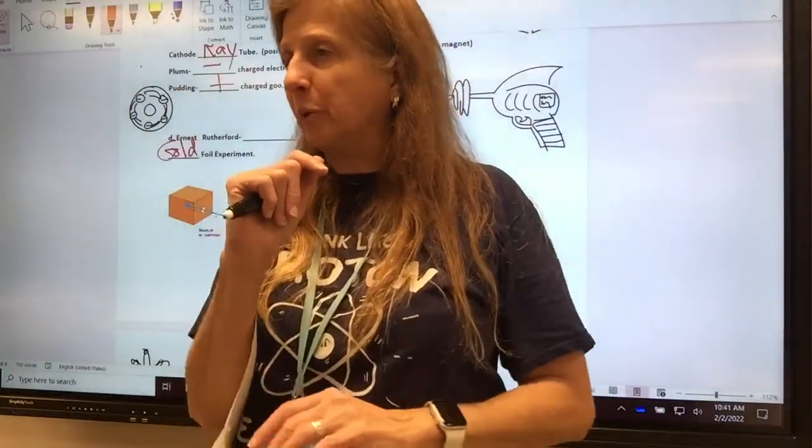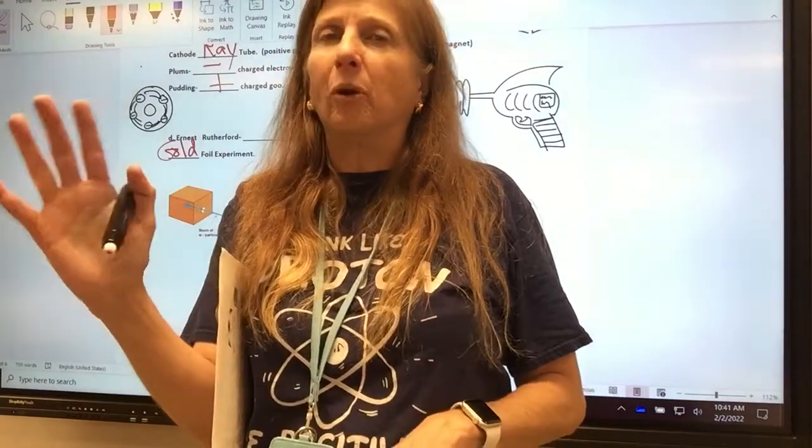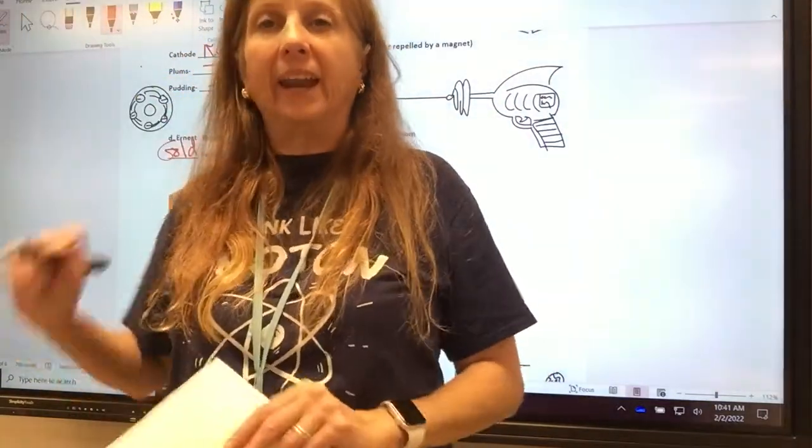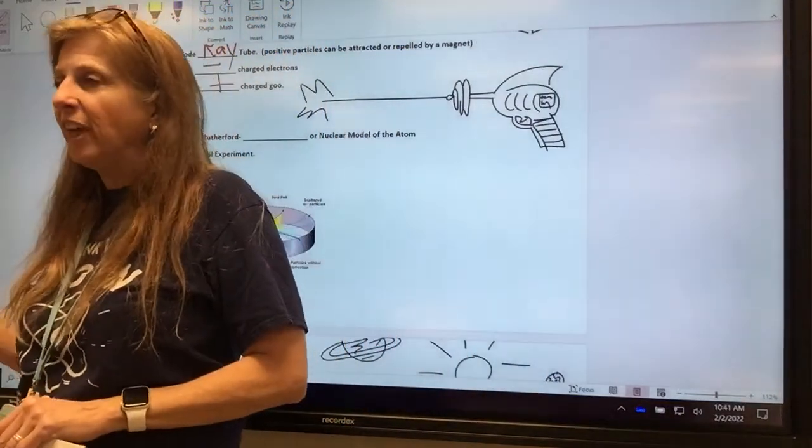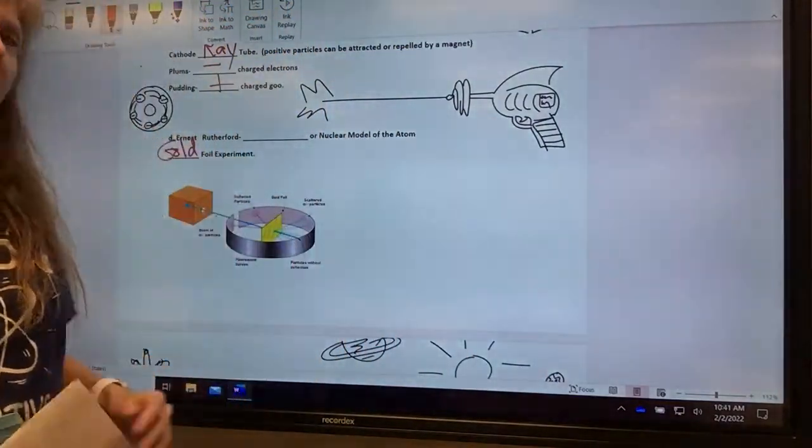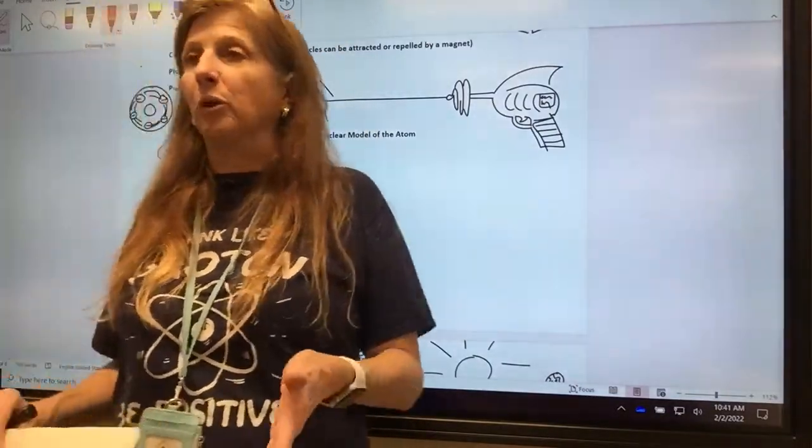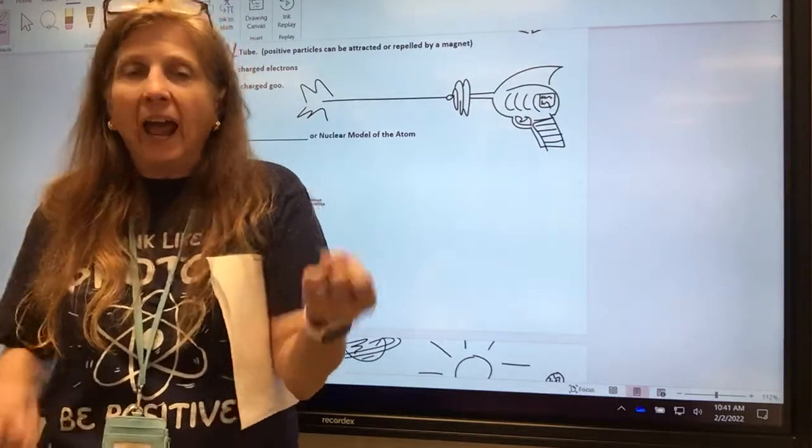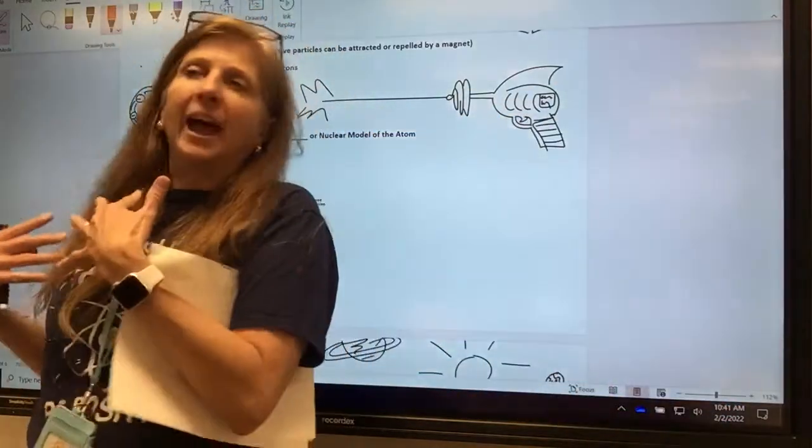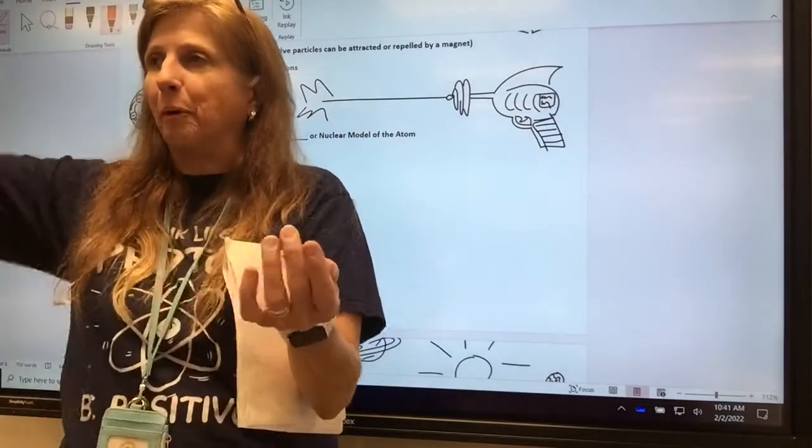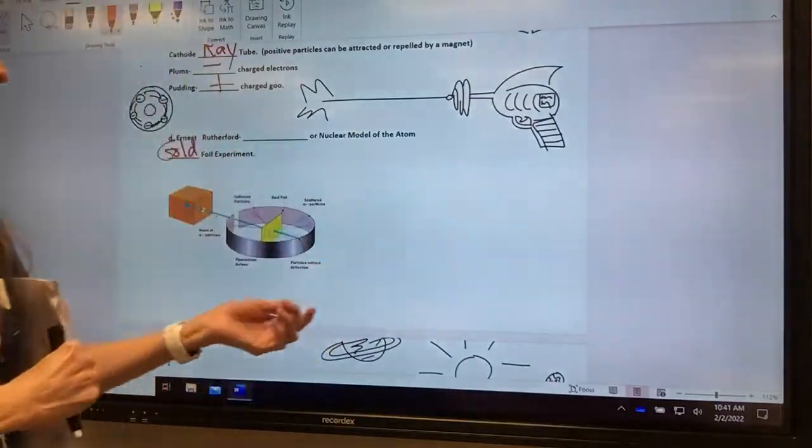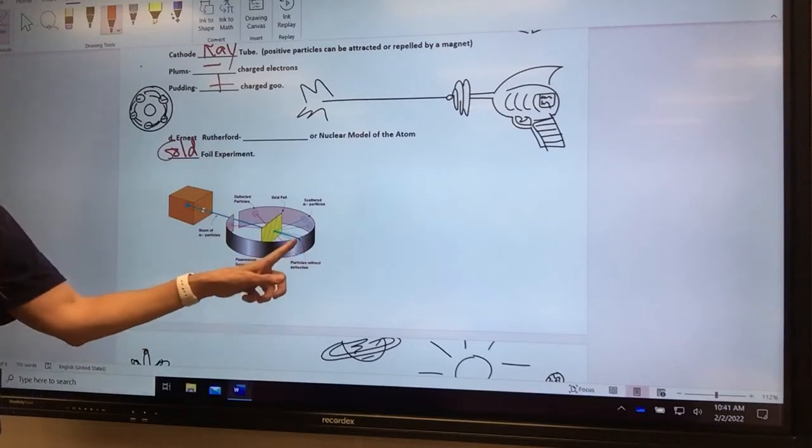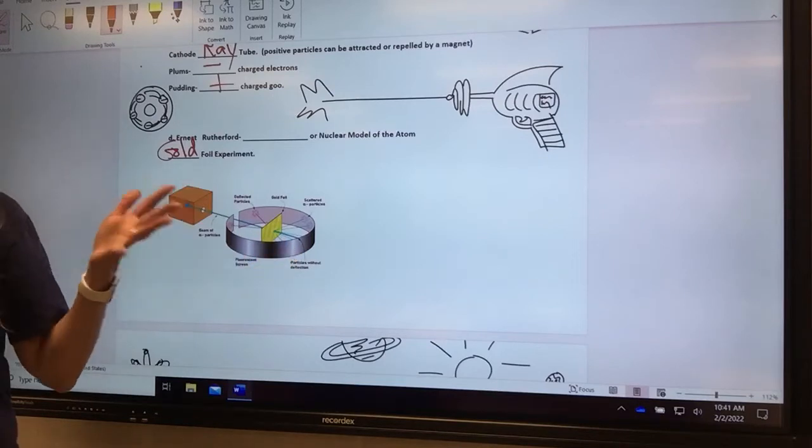Ernest was so confident that it was going to work, he didn't even show up for the experiment. He made his grad students do it, because it sounded kind of boring. But what happened was absolutely shocking. He said afterwards that he could not have been more shocked if he had taken a shotgun and shot a piece of tissue paper, and the contents of the gun came back and shot him.